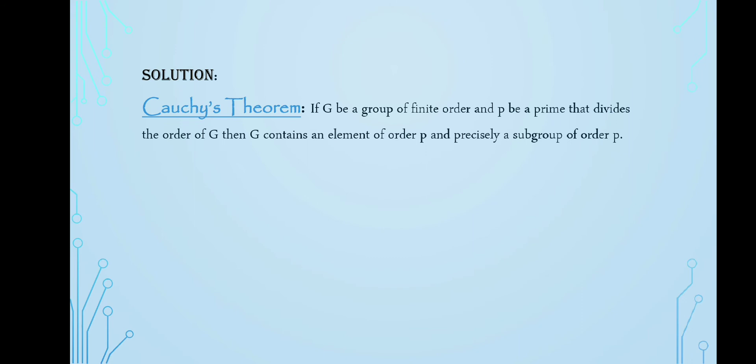So, for the solution, we will use a very famous theorem known as Cauchy's theorem. The theorem states that if G be a group of finite order and if P be a prime that divides the order of G, then G contains an element of order P and precisely there exists a subgroup of order P.